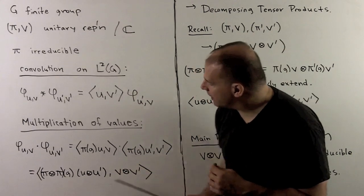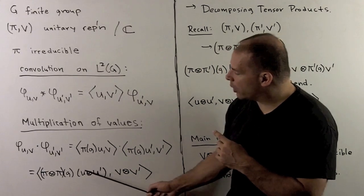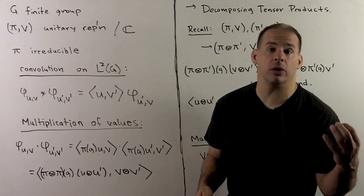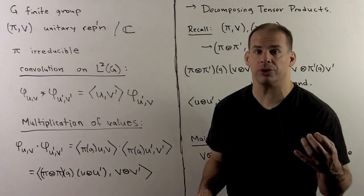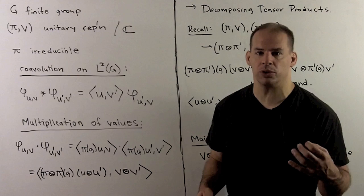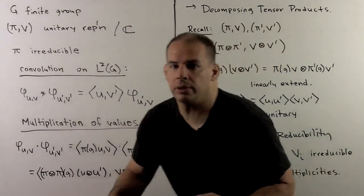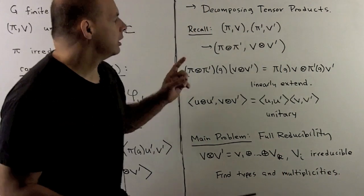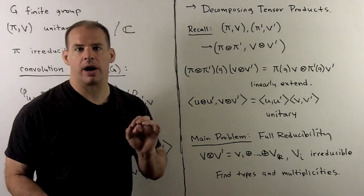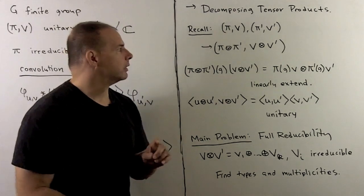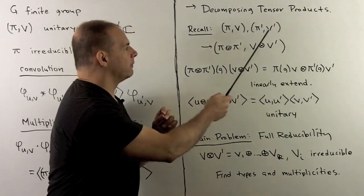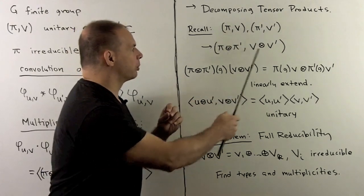Now, the problem here is: if I want an orthonormal basis of our tensor product, our first step would be to go to the irreducibles. So I want to know how do I decompose a tensor product into irreducibles. We're just interested in the general problem of decomposing tensor products. So we have two representations, pi, V and pi prime, V prime, and we want to form the tensor product.